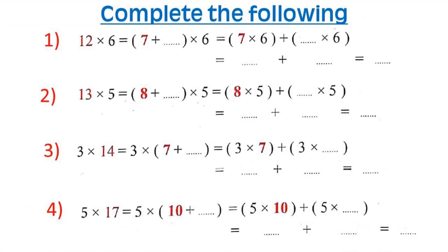Let's do this exercise. Complete the following. 12 times 6: we can break 12 into 7 plus 5. The 6 stays the same. So 7 by 6 plus 5 by 6 equals 42 plus 30 equals 72.